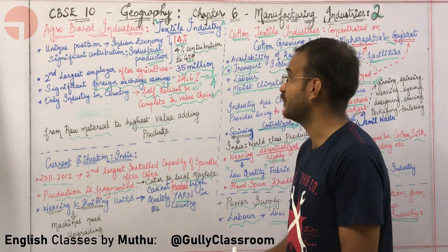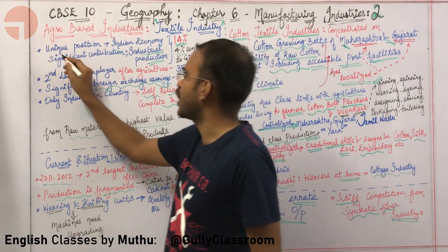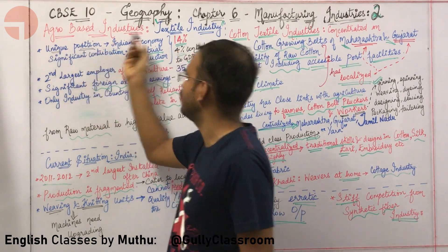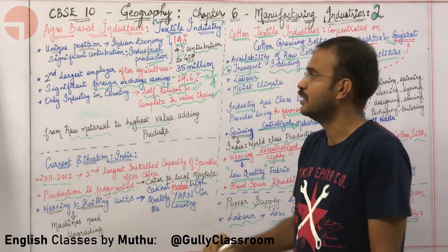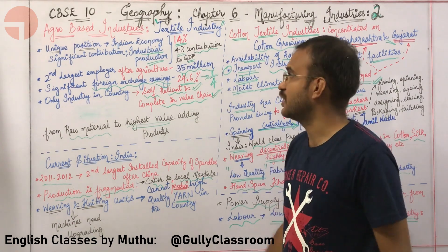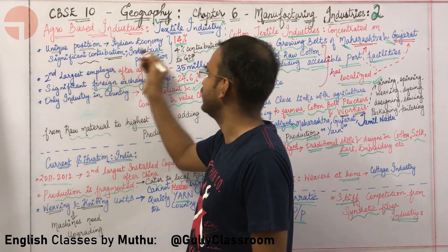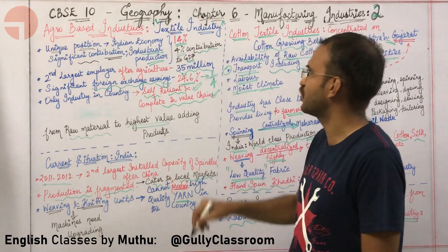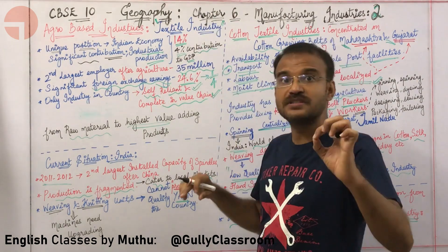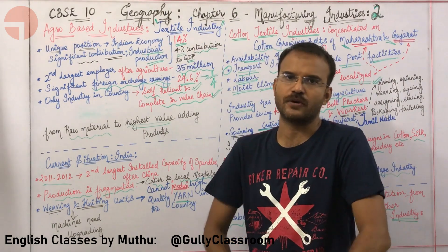Let us look at the first topic. Textile industries in India occupy a very unique position. They are contributing significantly to industrial production — in fact, they are contributing 14% of our total industrial production.